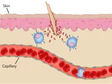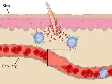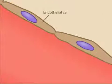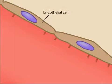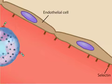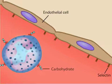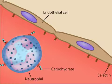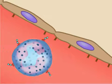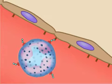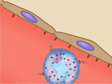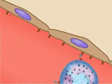Some cytokines diffuse into the vasculature and stimulate endothelial cells to express specific receptors called selectins. Selectin binds to carbohydrates on the surface of neutrophils, snagging the cells as they flow by in the bloodstream and slowing them down such that they roll along the endothelium.